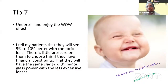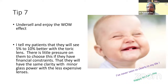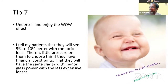Tip seven: undersell and enjoy the wave effect. Tell patients they will see 5 to 10% better with a toric lens. This takes pressure off them if they have financial constraints. Tell them they will have the same clarity with a minor glass power with the less expensive option — let them choose. And many of them will come back and tell you, 'Doctor, I never saw so clearly in my life, even when I was young.' Especially if you correct a 3 or 3.5 diopter cylinder patient, they will say they never saw so clearly in their life. This is my last tip. Over to you, Arup.